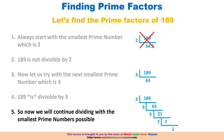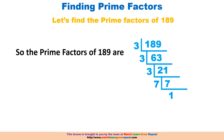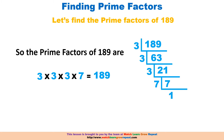The next prime number that 7 is divisible by is 7 itself, so we divide 7 by 7 and get 1 — we've got all the numbers figured out. The prime factors of 189 are 3 × 3 × 3 × 7, which gives you 189, your original number. That's basically how you find the prime factors of a given number.